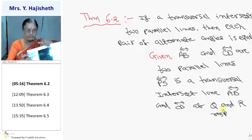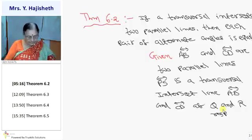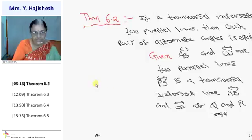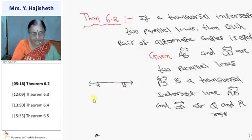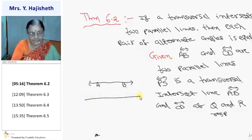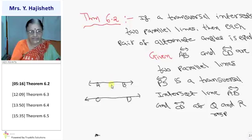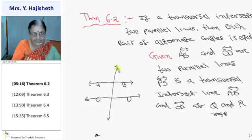Let me draw the figure. I draw two parallel lines AB and CD, and a transversal PS. The transversal PS intersects line AB at point Q and line CD at point R.